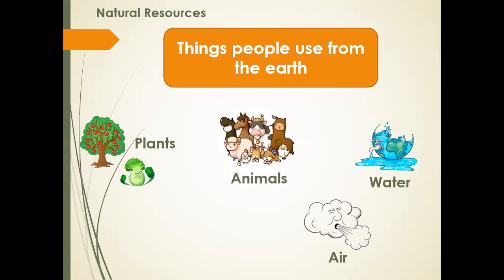Then animals — animals are a natural resource. People use animals to eat their meat, drink their milk, take eggs from chickens, and take wool from sheep. So we are using animals as a natural resource on the surface of the earth. The last thing, which is the topic of our lesson, is rocks. So natural resources are things found in nature — plants, animals, water, air, and rocks — created by God, not made by man.